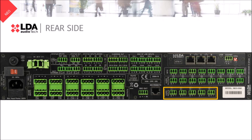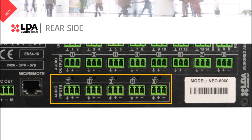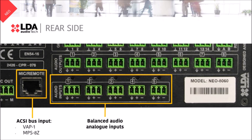We have five balanced audio analog inputs. For example, here we could connect a radio, CD or MP3 player. Please note that input number 5 is shared with our bus for microphones. We call it AXI bus.